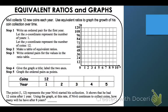It says equivalent ratios and graphs. It says at the top, Nivi collects 12 new coins each year. Use equivalent ratios to graph the growth of this coin collection over time. So here's what we're going to do. We're going to do all of these steps, and there's really like six questions, so we're going to do all six of those together. And then the rest of them you have to do on your own.